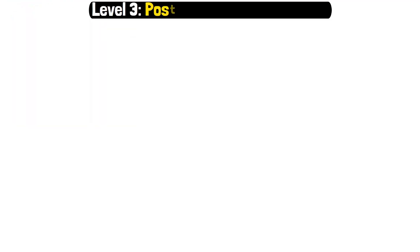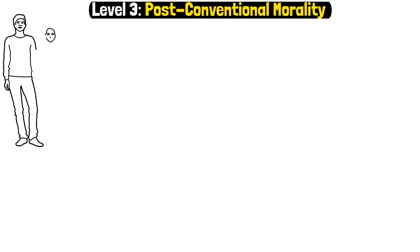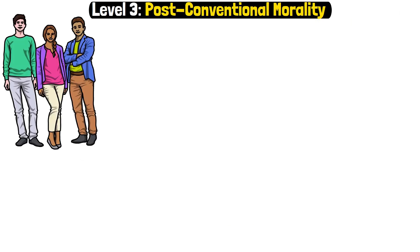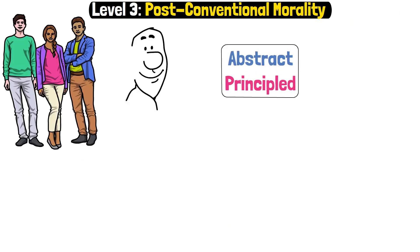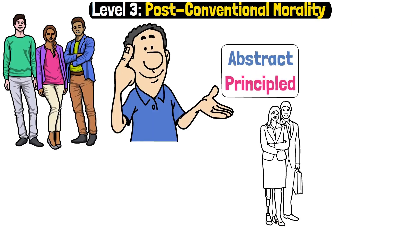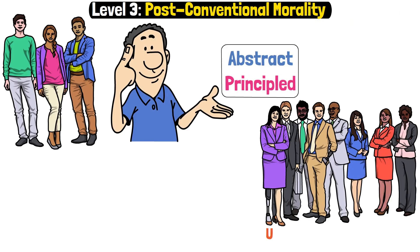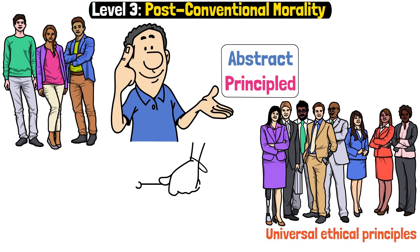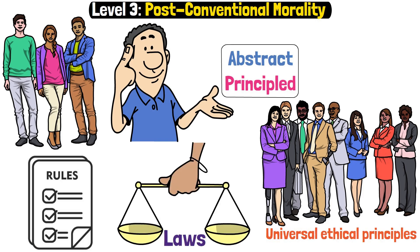Level 3 – Post-Conventional Morality. Few reach this stage, as it involves abstract, principled thinking. Individuals consider universal ethical principles that transcend laws and rules.